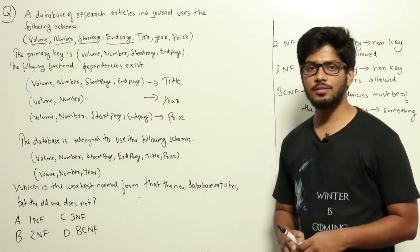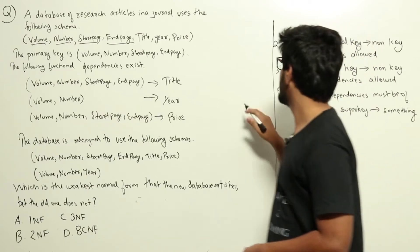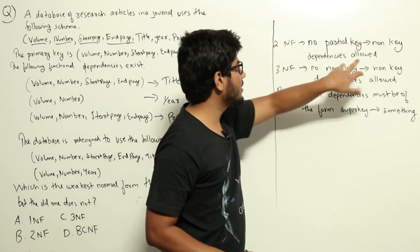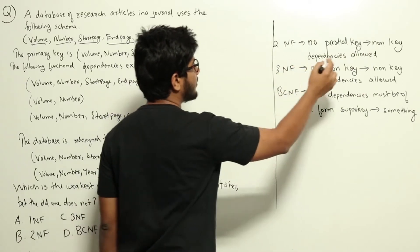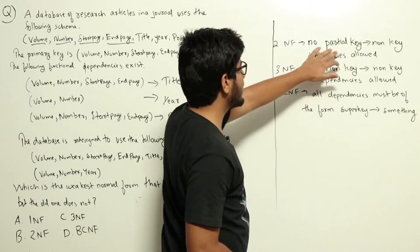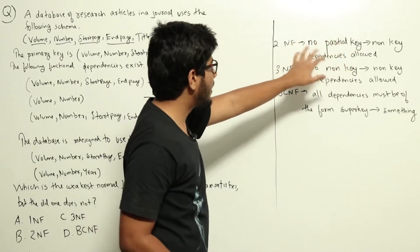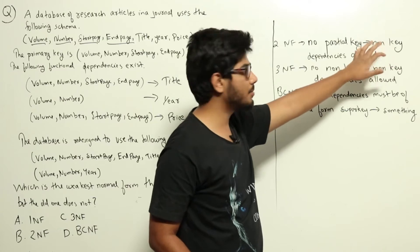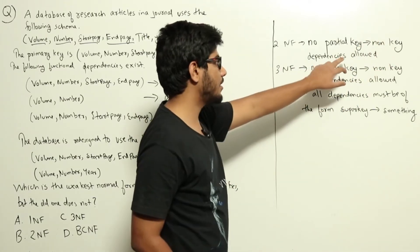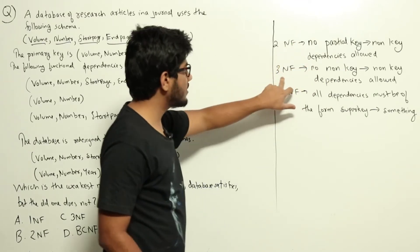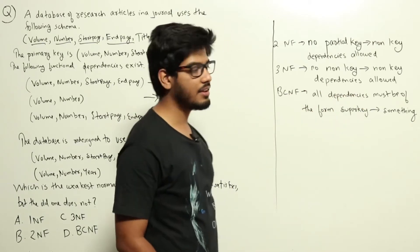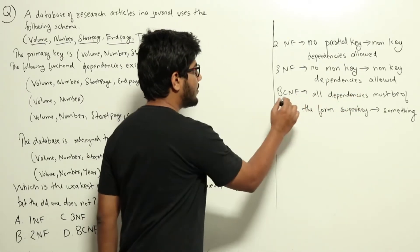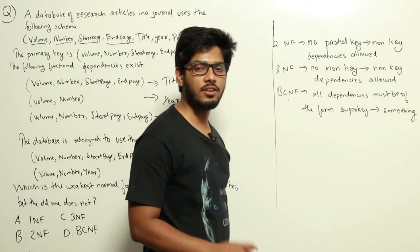Let us have a quick refresh of what the condition for each normal form is. For a database to be in second normal form, no partial key to non-key functional dependencies are allowed. A partial key attribute is some attribute which is part of the primary key but doesn't form the full primary key. A database is in 3NF if no non-key to non-key functional dependencies exist.